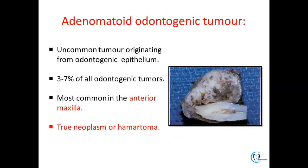Adenomatoid odontogenic tumour is an uncommon odontogenic tumour originating from the odontogenic epithelium. Out of all odontogenic tumours, 3–7% of cases are AOT. It is the third most common odontogenic tumour after odontome and ameloblastoma, and the most common location is the anterior maxilla. However, there are controversies whether to consider it as a true neoplasm or a hamartomatous malformation.